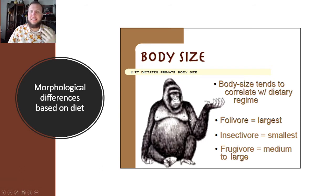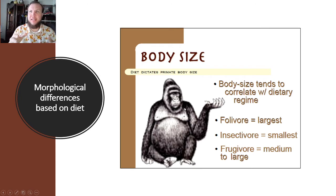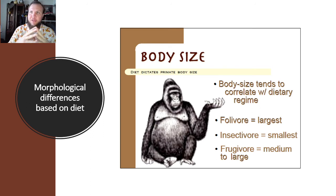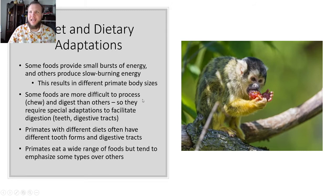Body size is another morphological difference correlated with dietary regimen. Folivores are the largest and insectivores are the smallest, related to the type of energy needed. Large animals need a lot of energy to digest their food. Insectivores eat insects, which are high in energy, so they don't need to eat a lot or be large to sustain themselves. The same applies to frugivores. Some foods provide small bursts of energy and others provide slow-burning energy — that's the difference in body size.